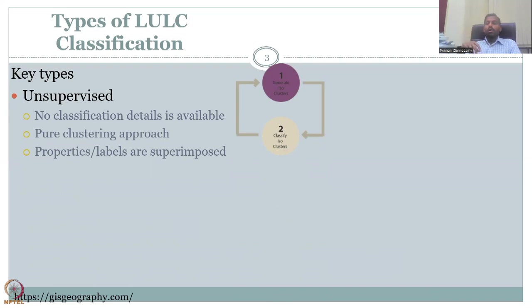So unsupervised means no classification details are there, which means you have an imagery and now you have to classify. Let's draw an example. You have a two rows and two columns, four pixels. So suppose you have four pixels. This is the image. And now you have to classify each pixel, each grid. So this is what we're going to look at. How do you classify?